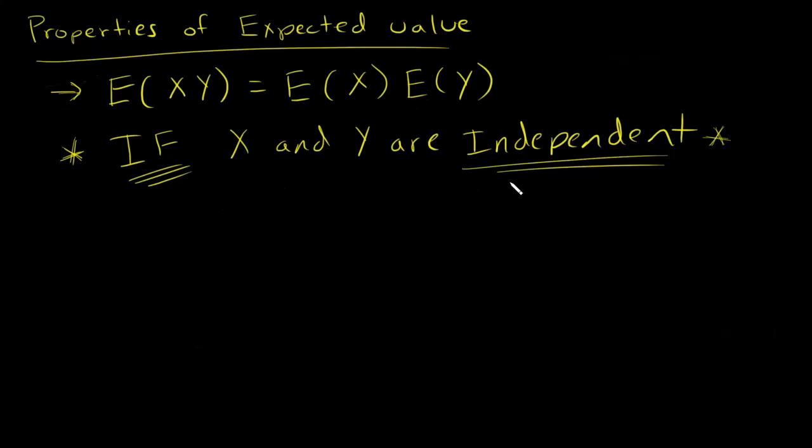First off, let's remember what independence means. If you have discrete random variables X and Y, your probability mass function for X and Y can be written as the product of the marginal mass functions. So the joint probability mass function is the marginal distribution of X times the marginal distribution of Y.